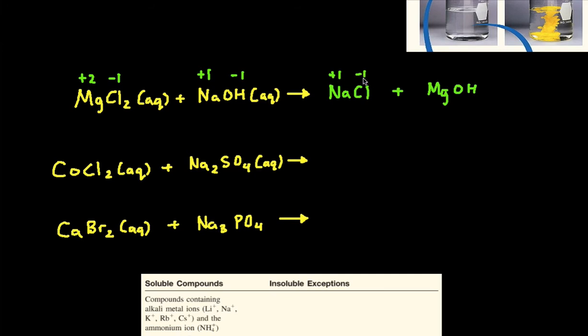Then, magnesium has a positive 2 charge and hydroxide has a negative 1 charge. These do not cancel each other out, so we can use the crisscross method to give us a neutral compound.